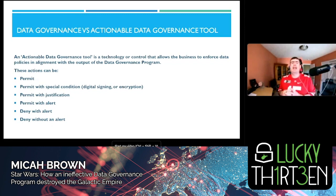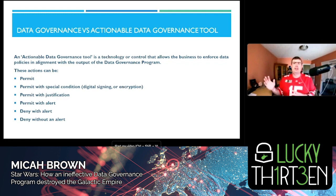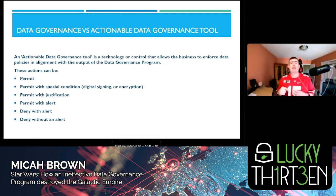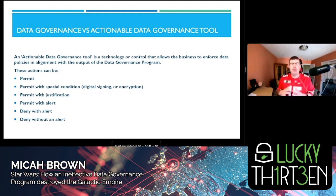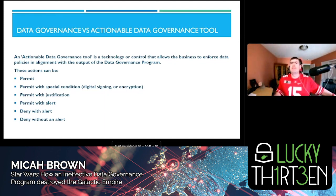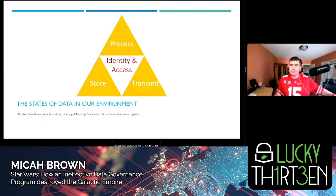An actionable data governance tool is any tool an organization uses to help support a data governance program, and generally these tools can take some action. They can permit an action, permit with a special condition such as requiring a digital signature or strong encryption, allow the user to provide a justification, permit and create an alert, deny with an alert, or deny without an alert. Different actions are available depending on which tool you're using.